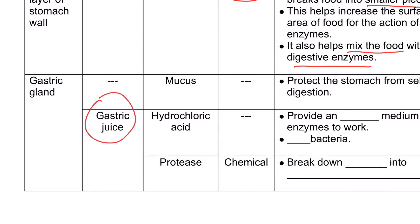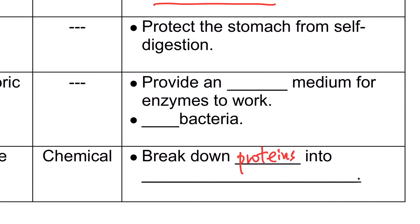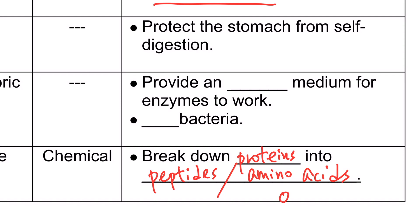In the stomach, there is also chemical digestion. Gastric juice is secreted from the gastric gland and contains three components. The first one is protease, a kind of enzyme that can help break down protein into peptides or amino acids. Amino acids are the basic unit of protein, while peptides are actually short chains of amino acids. If the protein is broken down into amino acids, it is then ready for absorption.